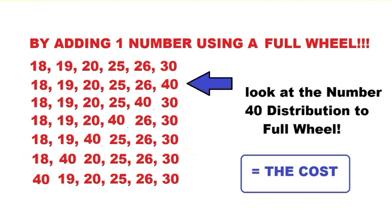The full wheel combinations are: 18 19 20 25 26 40, 18 19 20 25 40 30, 18 19 20 40 26 30, 18 19 40 25 26 30, 18 40 20 25 26 30, and 40 19 20 25 26 30.